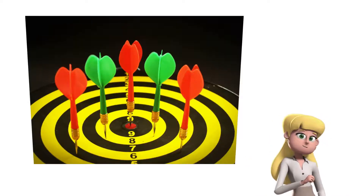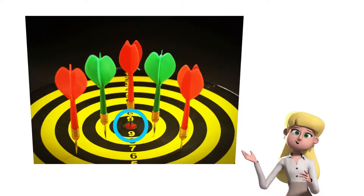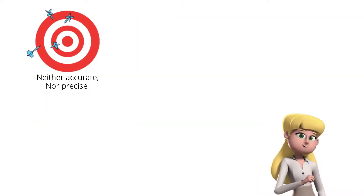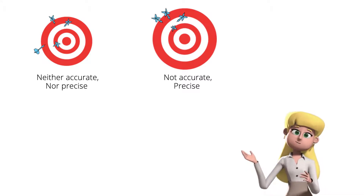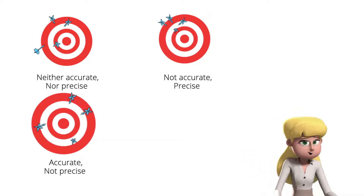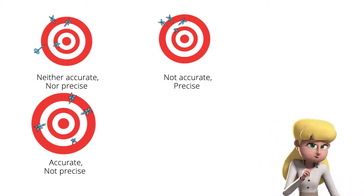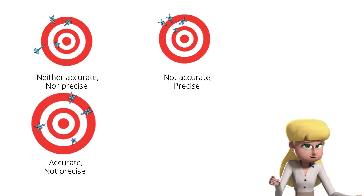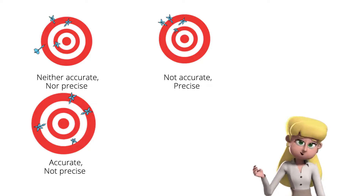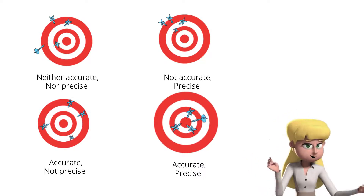A classic way of demonstrating the difference between precision and accuracy is by using a dartboard. Think of the bullseye as the true value — the closer the darts land to the bullseye, the more accurate they are. If darts are neither close to the bullseye nor close to each other, there is neither accuracy nor precision. If darts land very close together but far from the bullseye, there is precision but not accuracy. If darts are spaced equally around the bullseye, there is mathematical accuracy because the average of the darts is at the bullseye, but not precision. If darts land close to the bullseye and close together, there is both accuracy and precision.